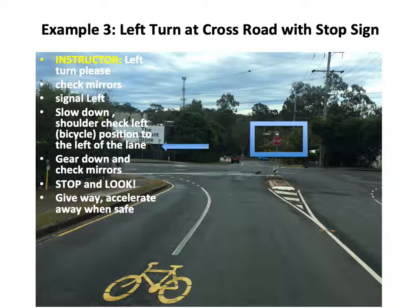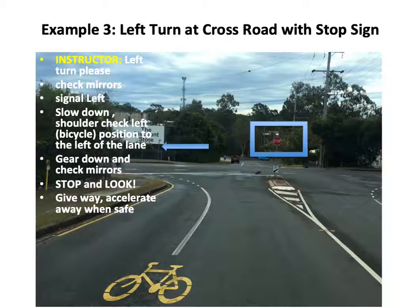Example three: turn left at crossroad with stop sign. I've put a box around the stop sign so it jumps out in the picture, and drawn an arrow to the left to show the direction of travel. Left turn, please. Check your mirrors, signal to the left, slow down, shoulder check to the left for any bicycles, position the vehicle towards the left of the lane. Gear down, check mirrors, stop completely with the nose of the vehicle behind the stop line. Scan, give way if necessary to all vehicles in our path. Accelerate away when safe.